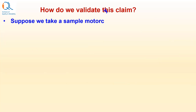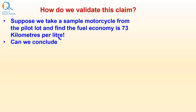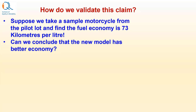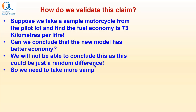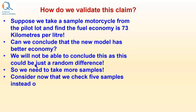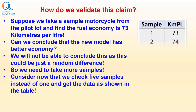So how do we validate this claim? Suppose we take a sample motorcycle from the pilot lot and find the fuel economy as 73 km per litre. Can we now conclude that the new model has better fuel economy? We will not be able to conclude this, as this could just be a random difference. So we need to take more samples. Consider now that we check 5 samples instead of 1, and get the data as shown in the table here.